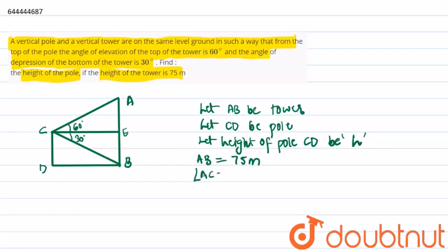And angle ACE equals 60 degrees and angle BCE equals 30 degrees.